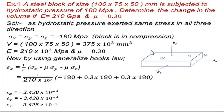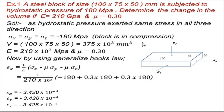As you can see in this block diagram, sigma x, sigma y, and sigma z in all three directions are compressive in nature, and all three stresses are equal in magnitude. So sigma x equals sigma y equals sigma z equals minus 180 MPa. The minus sign is taken for the compressive nature of the stress, so this block is in compression.